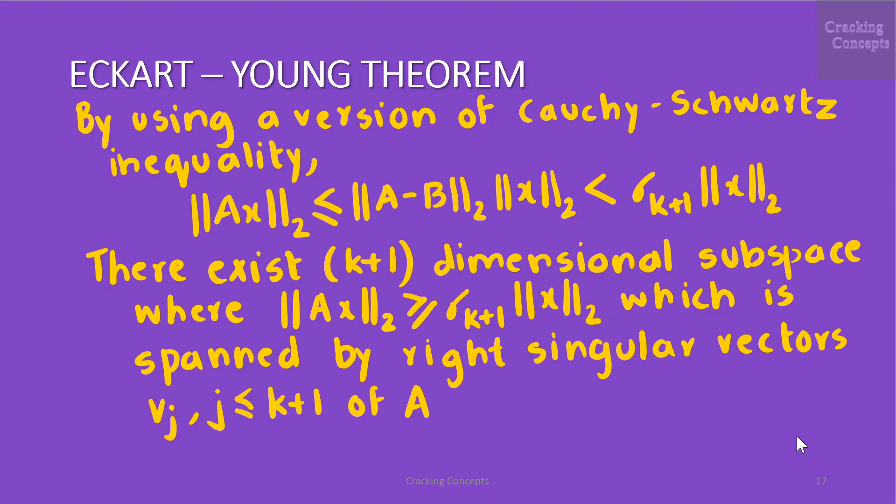However there exists a k+1 dimensional subspace where Euclidean norm of Ax is greater than or equal to σ_{k+1} times Euclidean norm of x which is spanned by the right singular vectors V_j where j is less than or equal to k+1 of A. Adding up the dimensions of these two spaces yield a number greater than n as there must be a non-zero vector in both spaces. This is a contradiction to the rank nullity theorem.